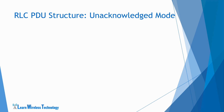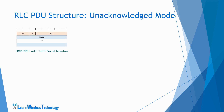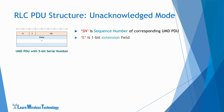Next is the unacknowledged mode PDU, also referred to as UMD PDU. This is a simple example of a UMD PDU with a 5-bit sequence number. It consists of a header field and a data field. The header field consists of a sequence number field, i.e. SN field, which indicates the sequence number of the corresponding UMD PDU. The E field is the extension bit that holds a 1-bit value indicating whether further data fields or header fields follow. The FI field gives framing information related to segmentation, indicating whether an RLC SDU is segmented at the beginning or at the end of the data field.